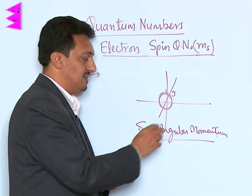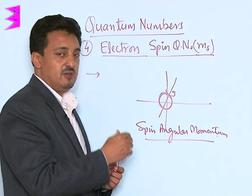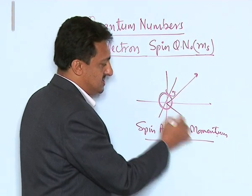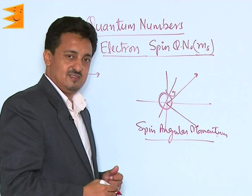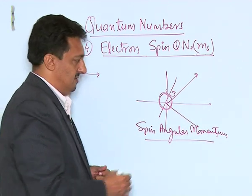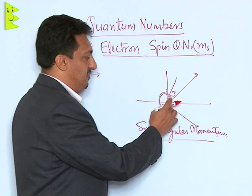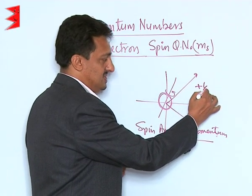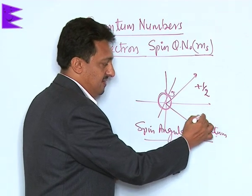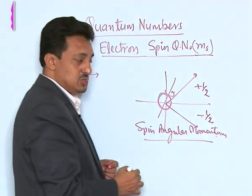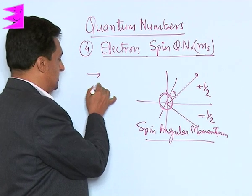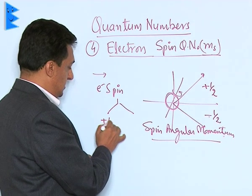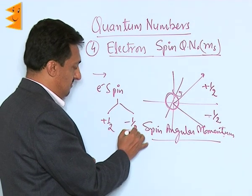Since spin angular momentum is a vector quantity, it can have two possible orientations: either along the positive axis or along the negative axis. If oriented along the positive axis, we assign a value of plus half; if along the negative axis, we assign minus half. So electron spin takes two values: +1/2 and -1/2.